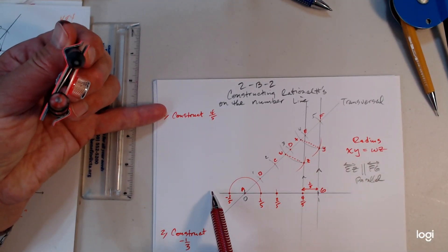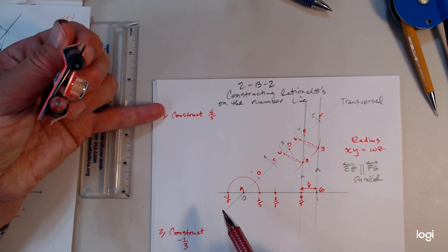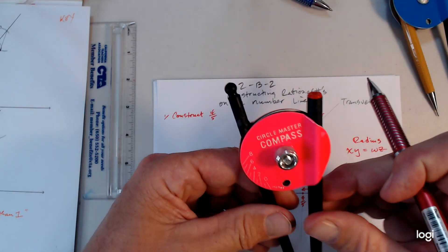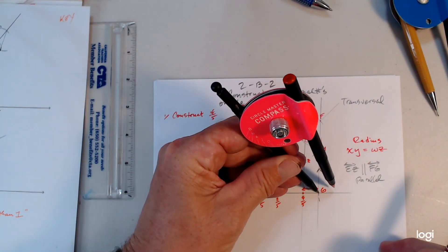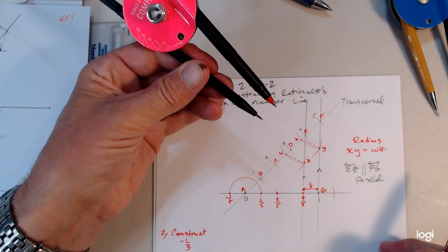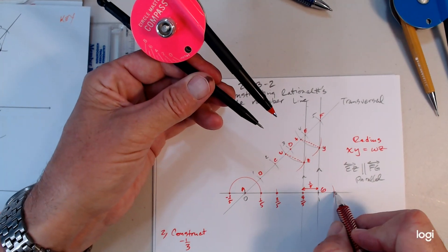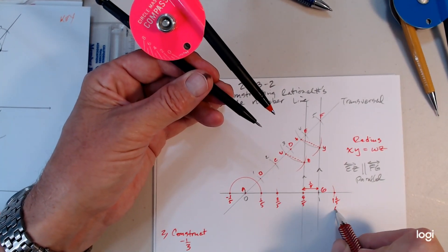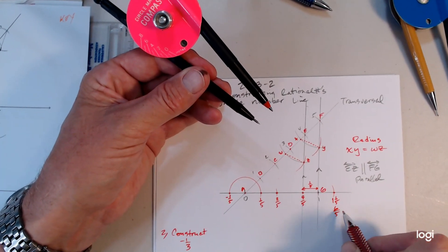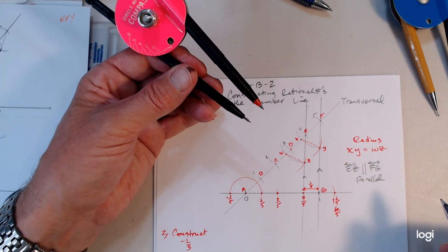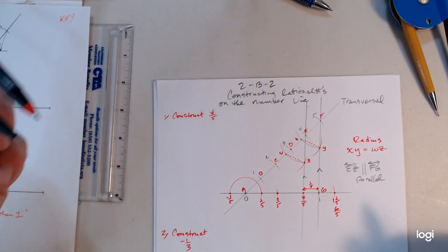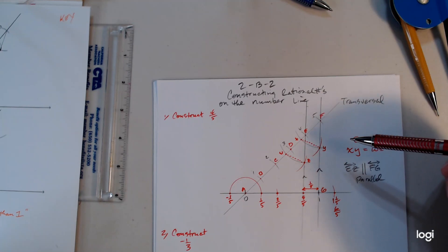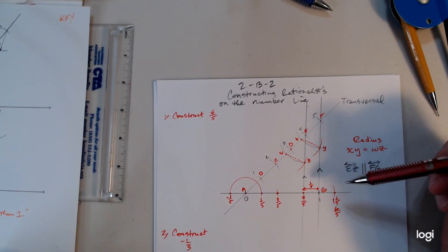If I want negative two-fifths, it would be to the left of zero. If I want to go beyond one — no problem. This point is one and one-fifth, commonly known as six-fifths. So you can get improper fractions. There's a lot of things you can do once you have the basic drawing.